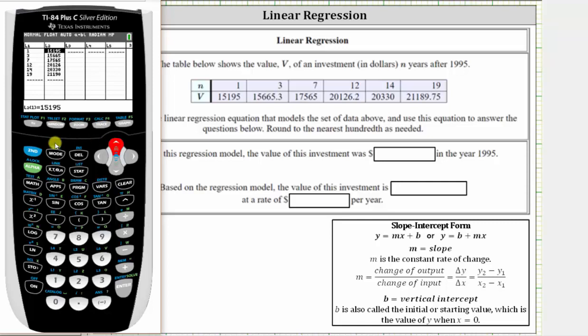And now we go back to the home screen by pressing second mode for quit. We go back to the stats menu by pressing stat, but now we press right once for the calculation menu.